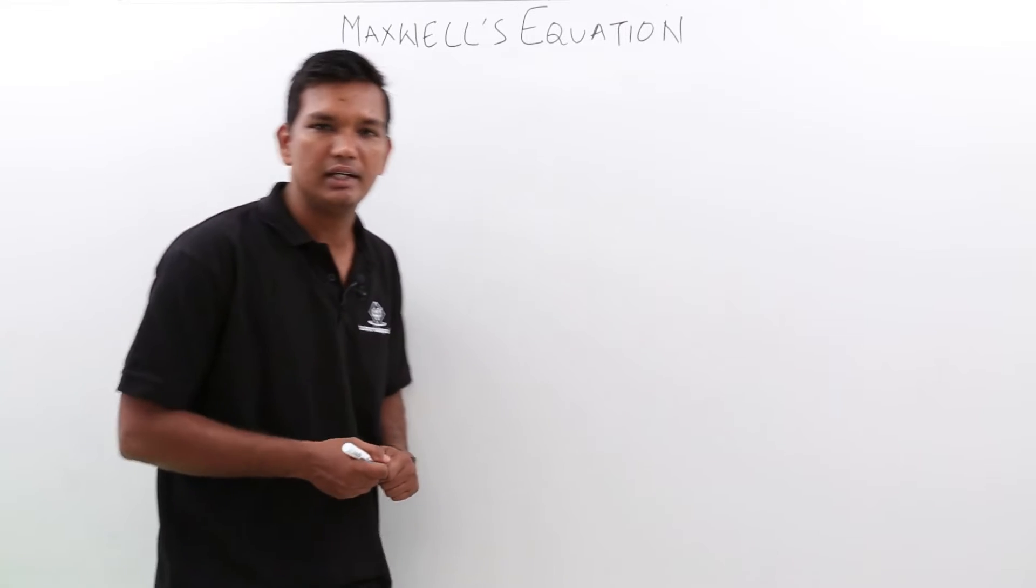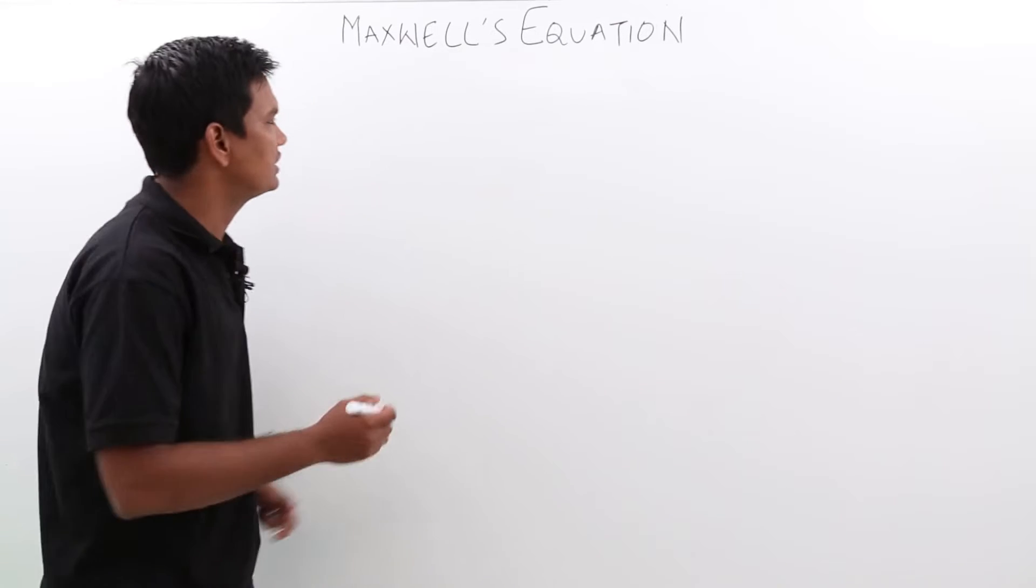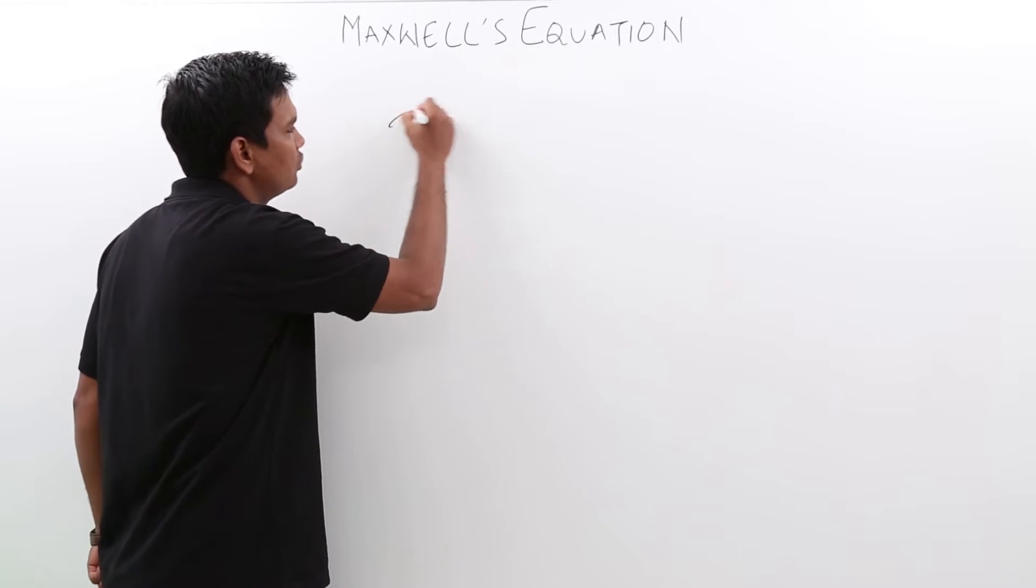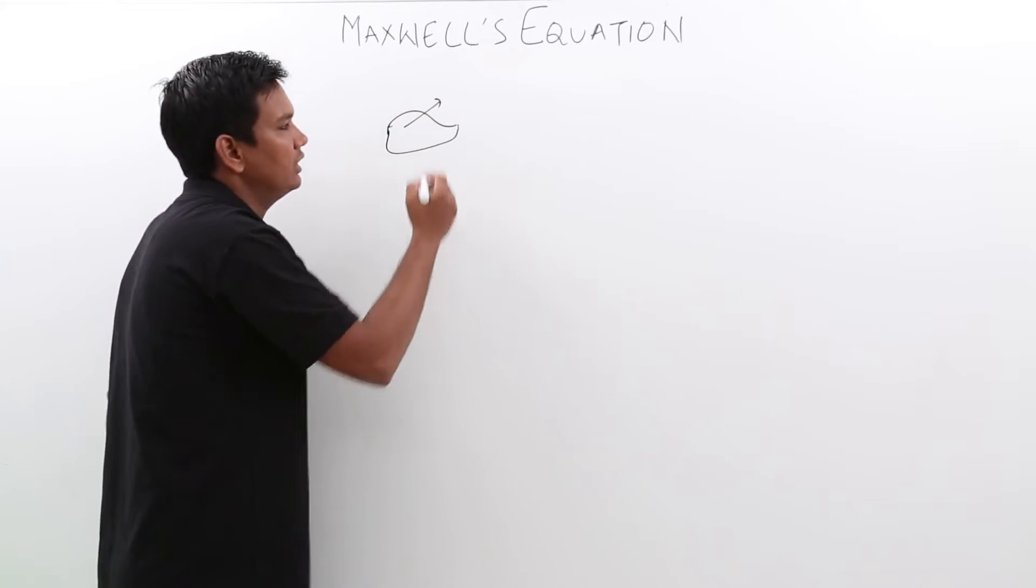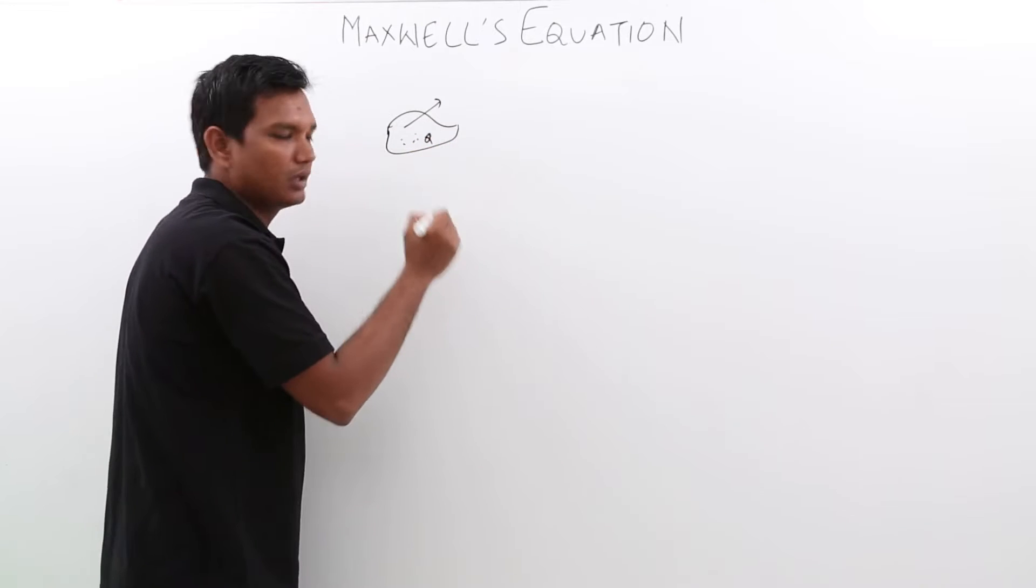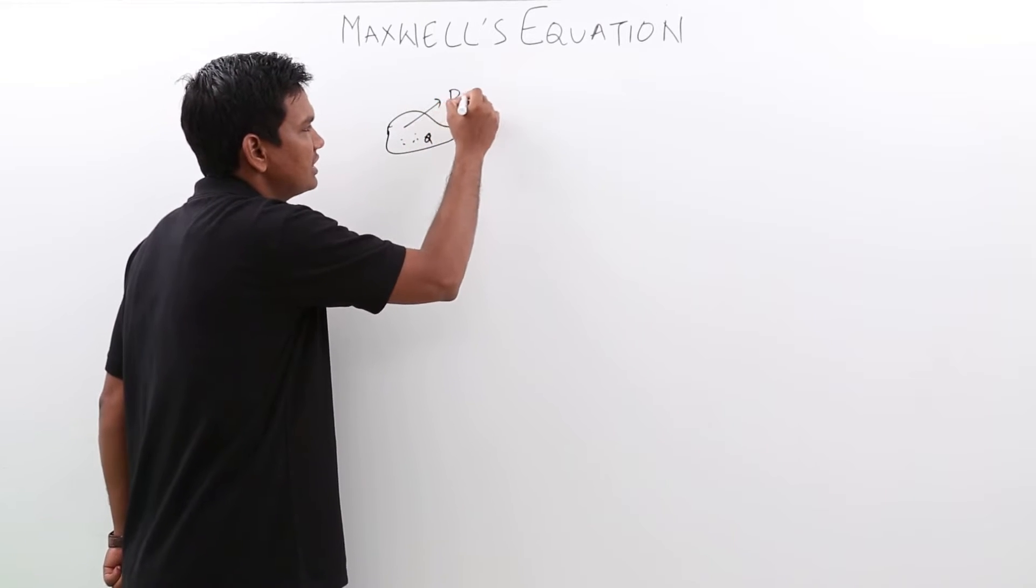As you know, when we were proving Gauss law, we stated that if I have a closed body carrying a charge q, there will be flux lines leaving out.